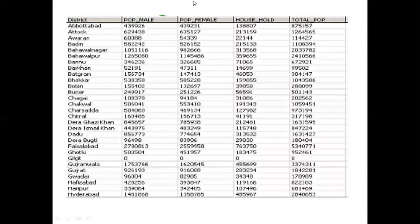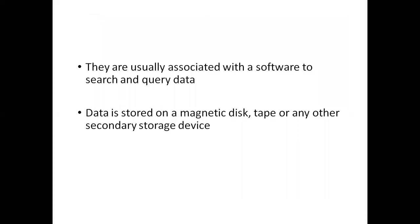For example, we have population data. In this population data, there are many districts with male and female population, total household population. We can search it, add figures, delete figures. If we want to arrange data in this form, we can generate data, and then we call it database data.